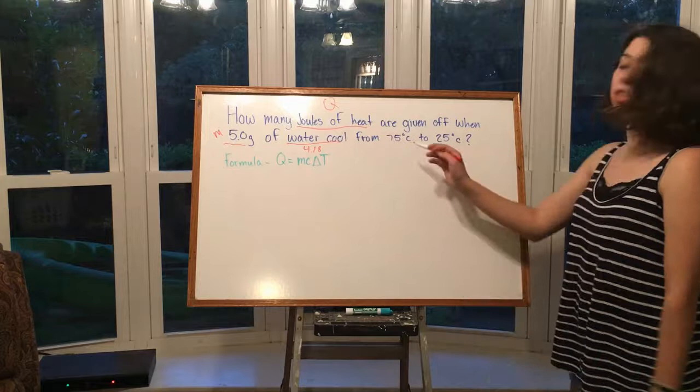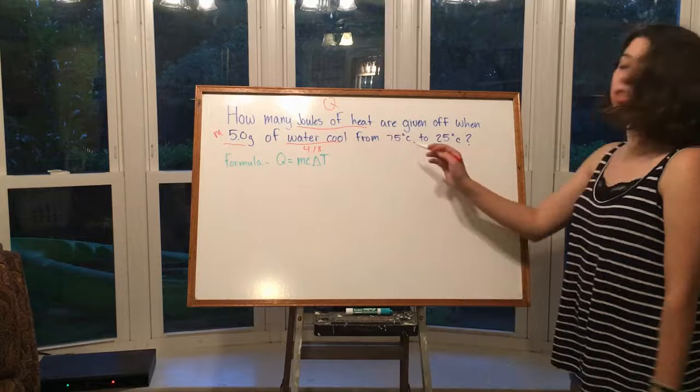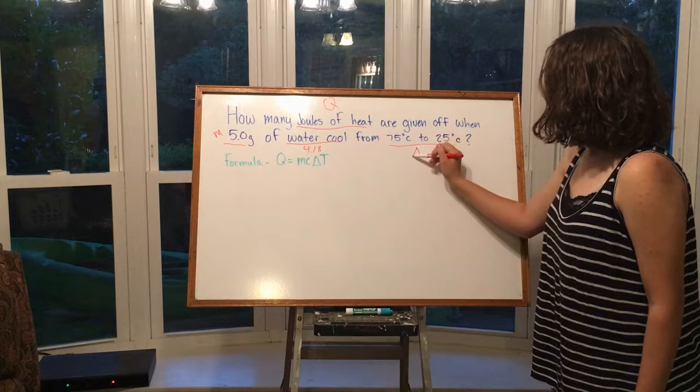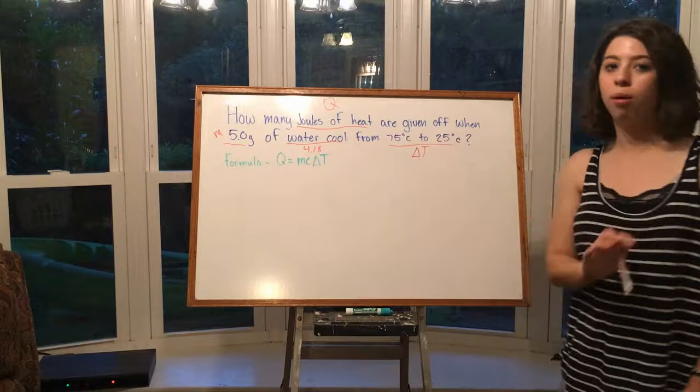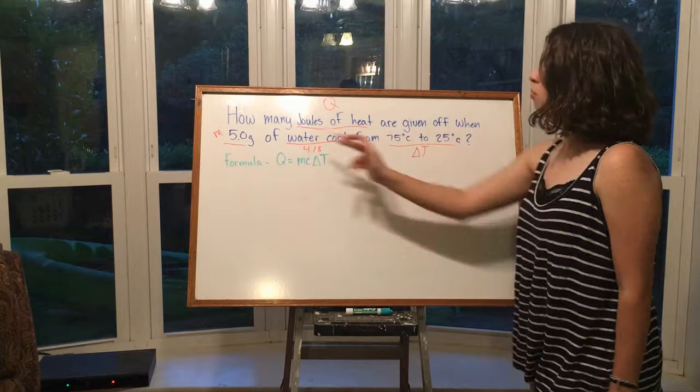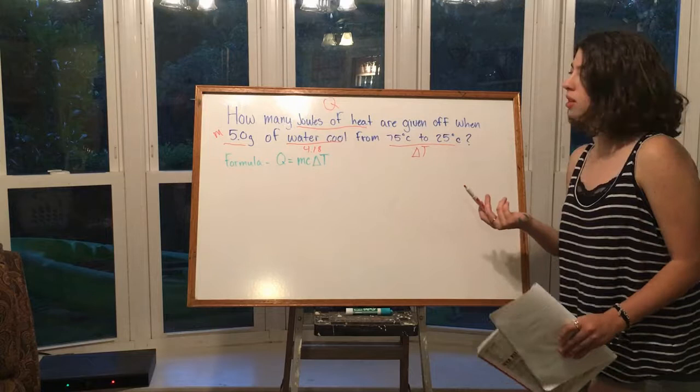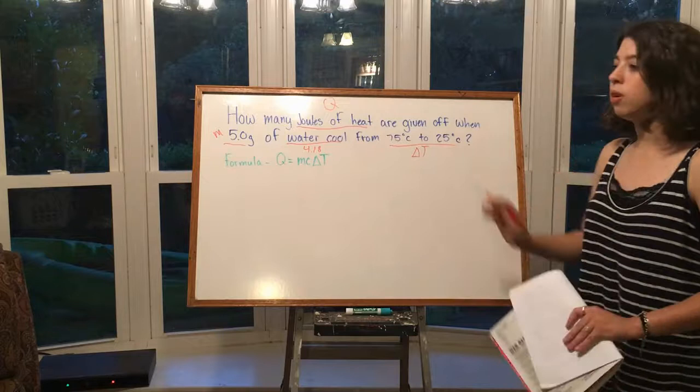ΔT is the change in temperature, going from 75°C to 25°C. The problem asks: how many joules of heat are given off when 5 grams of water cool from 75 degrees Celsius to 25 degrees Celsius? We're solving for Q.